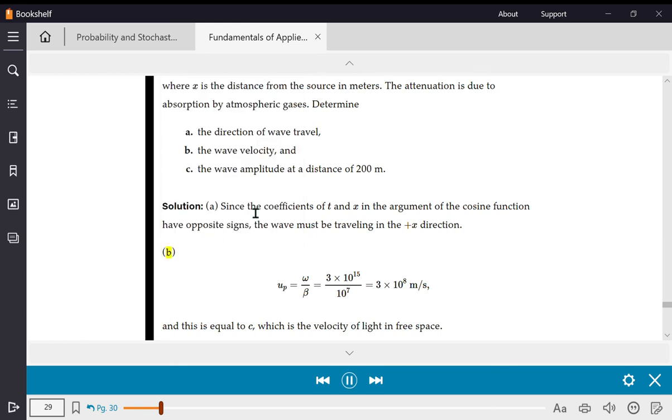B. Up equals omega beta equals 3 times 10 to the 15 over 10 to the 7 equals 3 times 10 to the 8 meters per second. And this is equal to C, which...